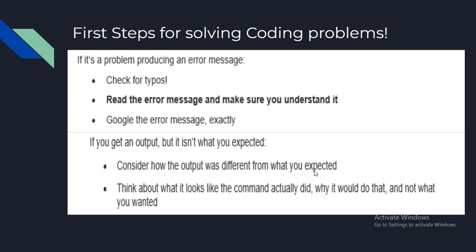If you get an output but it isn't what you expected, consider how the output differed from what you expected, think about what the command actually did and why it would do that instead of what you wanted. Most problems like this occur because the command you provided told the program to do one thing and it did exactly that — it just turns out what you told it to do wasn't what you actually wanted. Looking at the output you did get, comparing it to what you wanted, and thinking about how the program produced that output is the quickest way to figure out what went wrong.